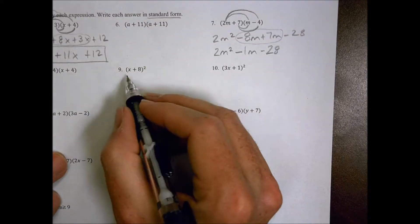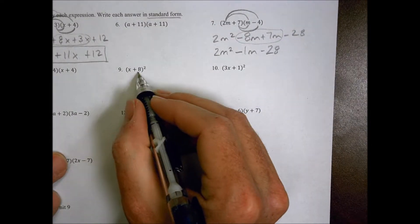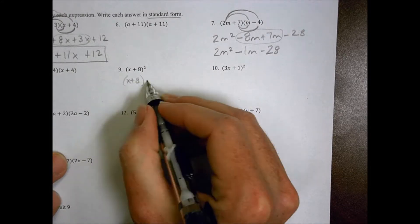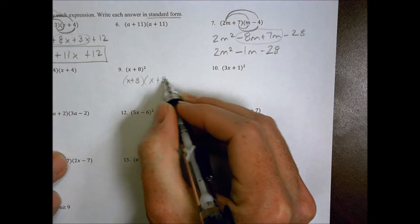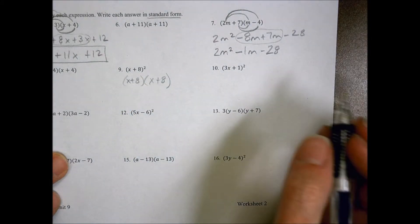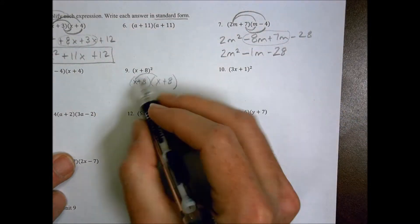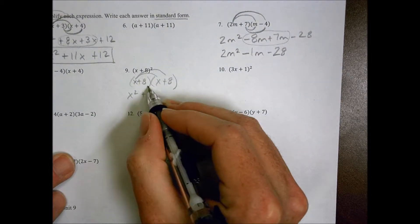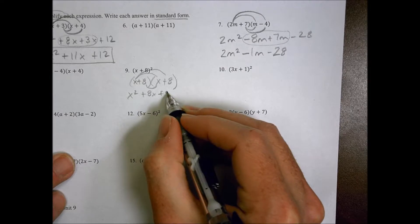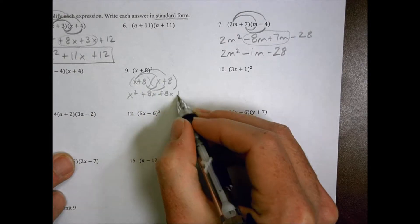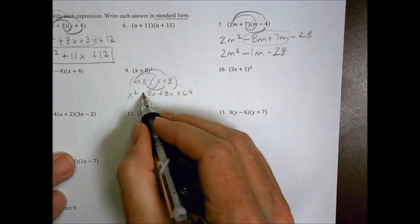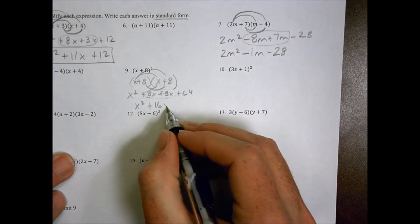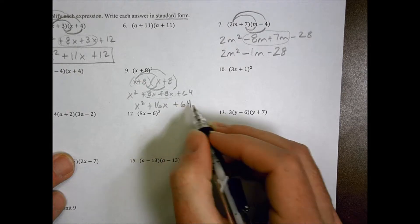Number 9. I can rewrite this — x plus 8 squared is the same as x plus 8 times x plus 8. Multiplying: x times x is x squared, x times 8 is 8x, 8 times x is 8x, and 8 times 8 is 64. Combining like terms: x squared plus 16x plus 64.